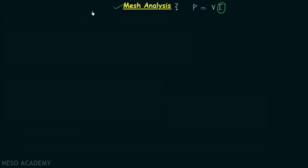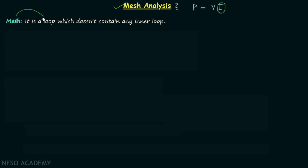Let's begin our discussion. First we will understand what is a mesh, and then I will give you all the steps required to perform the mesh analysis. A mesh is a loop, but not a normal loop — this loop does not contain any inner loop. So whenever you have a loop having no loops inside, you will call it a mesh. A loop is a path having the first node and the last node the same.